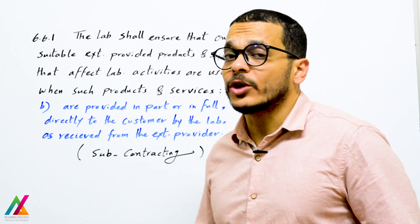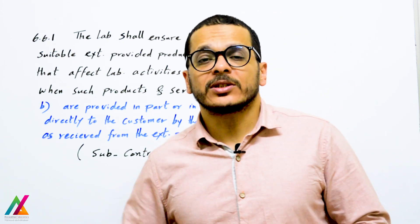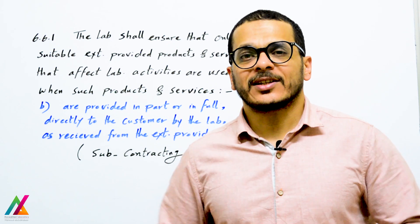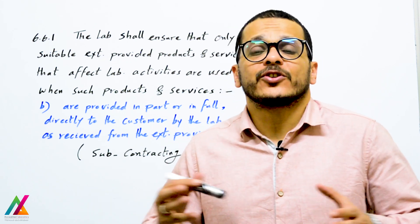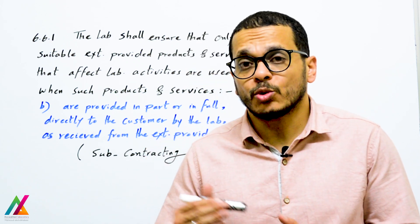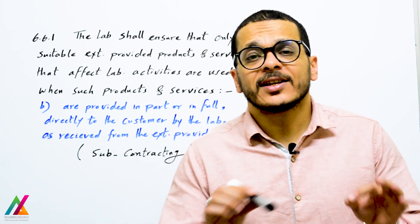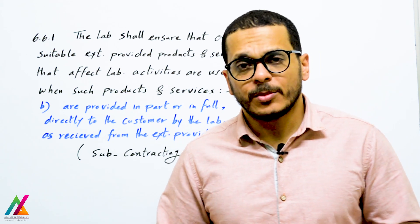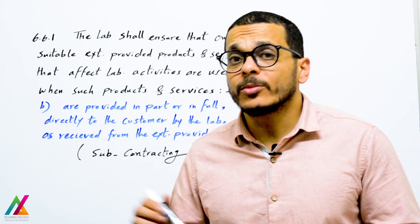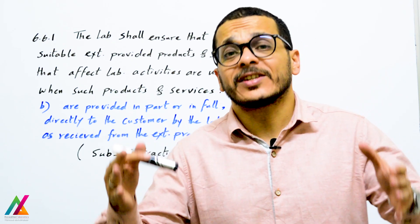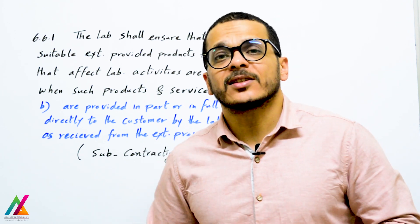When products and services are provided partly or fully directly to the customer by an external provider, this relates to subcontracting. For example, if the lab cannot analyze specific target analytes due to a deficiency in required facilities, the lab will make a subcontract with another lab for a specific period. The lab shall ensure the competency of that subcontracted lab, that it fulfills the requirements of this document, has all required facilities, and can achieve all requirements for the method and target analytes.